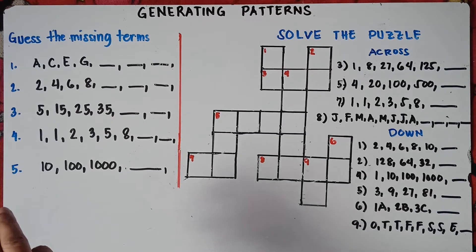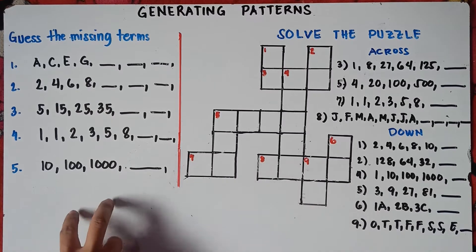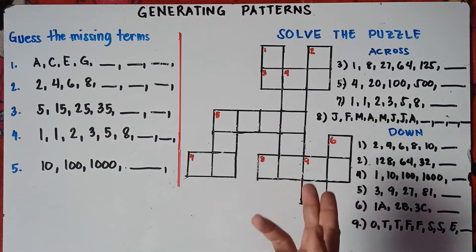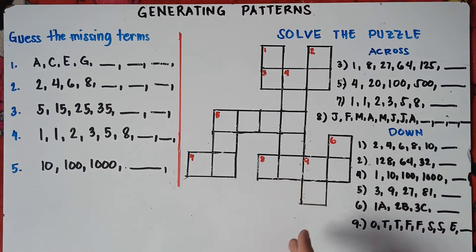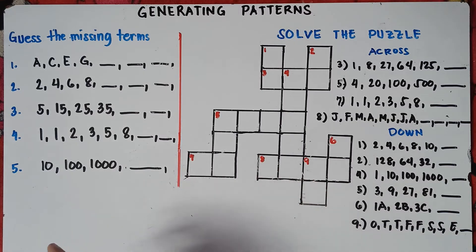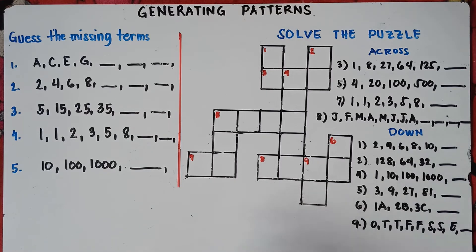We will be guessing the missing terms, and then later on we will solve the puzzle. So let's start with number one. You need to analyze the sequence: A, C, E, G. Think about any patterns or solutions you can find for A, C, E, G.